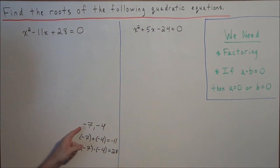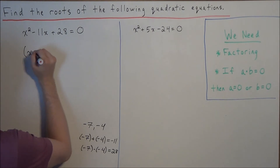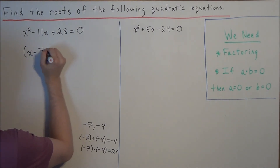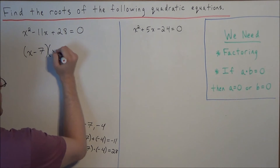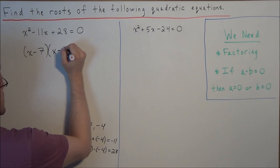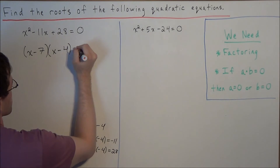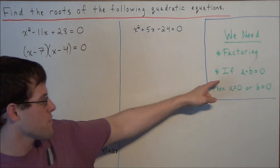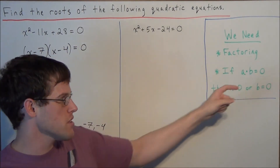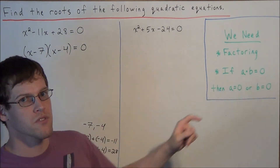So this tells us that we can factor into: x minus 7 as the first factor, and x minus 4 as the second factor. And remember, the product of these two factors is equal to zero. So now we're going to use the following fact: if a times b equals zero, then either a equals zero or b equals zero.